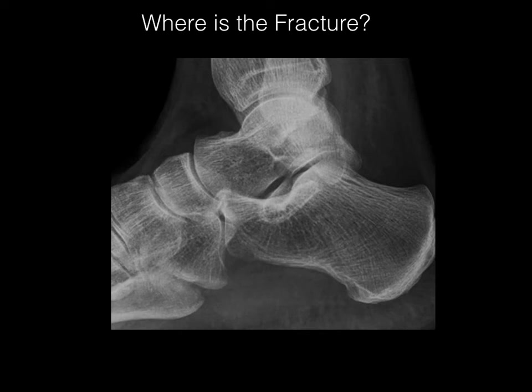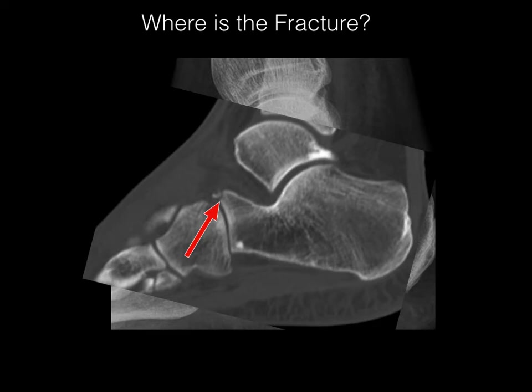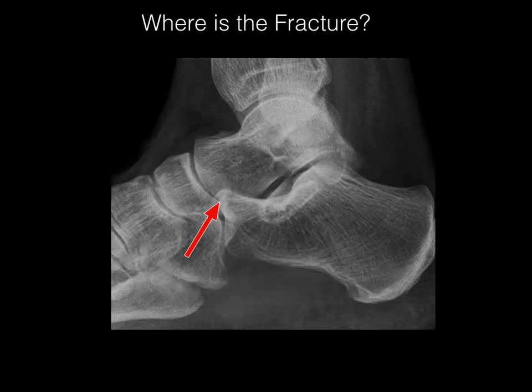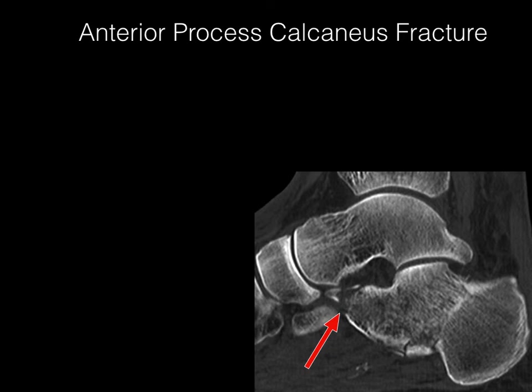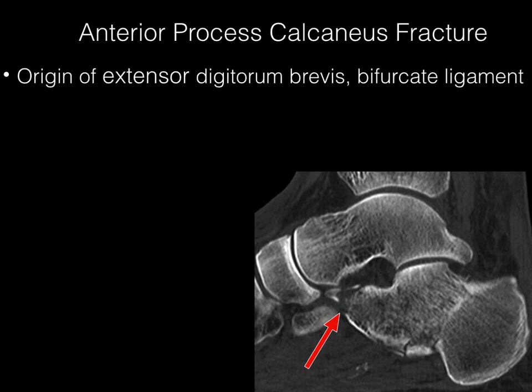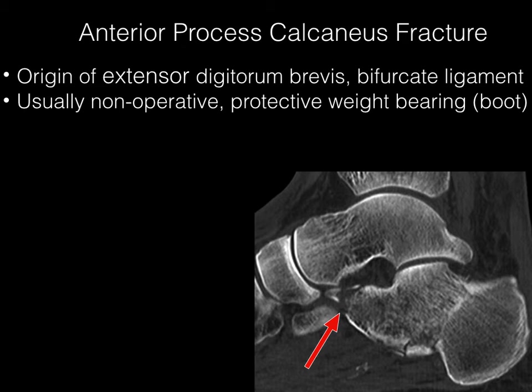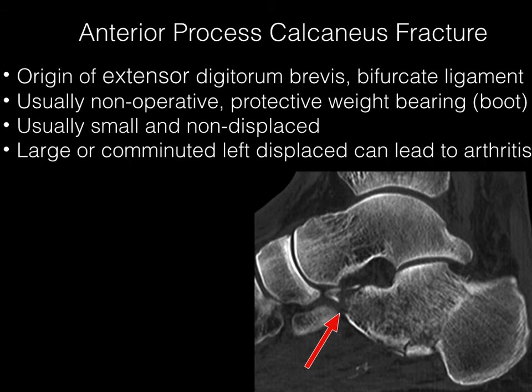Is there a fracture here, and where is it? It's hard to see on radiograph, but CT shows this very small anterior process of the calcaneus fracture. These are generally due to the origin of the extensor digitorum brevis or the bifurcate ligament. They're usually non-operative, small, and can be treated with protective weight-bearing with a boot. They're usually non-displaced, but if large or comminuted, they can lead to arthritis.